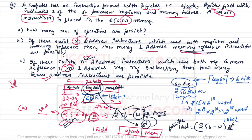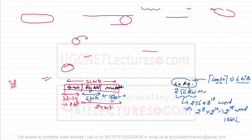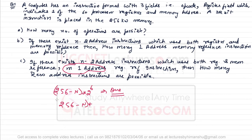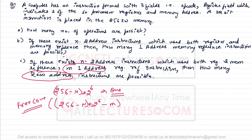For part three: if there exist n two-address instructions and m one-address instructions, then those m one-address instructions are being utilized out of the available (256 − n) × 2^6. The remaining free combinations are (256 − n) × 2^6 − m. These free combinations are available for zero-address instructions.